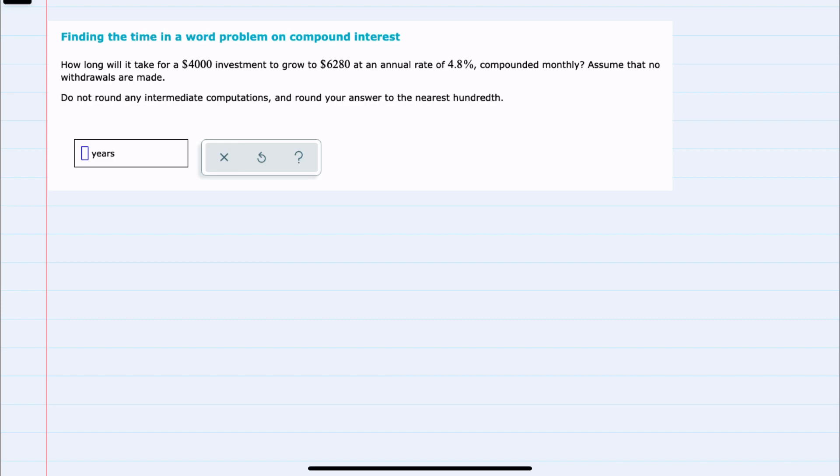We're asked how long it will take for $4,000 invested to grow to $6,280 at an annual rate of 4.8% compounded monthly, assuming that no withdrawals are made. And our formula for compound interest is A...